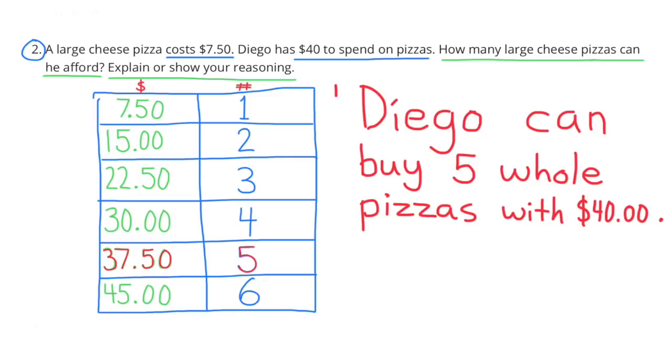Five pizzas, you're just adding $7.50 to $30, which is $37.50. And finally, six pizzas is $45. That's too expensive. So Diego can buy five whole pizzas with $40.